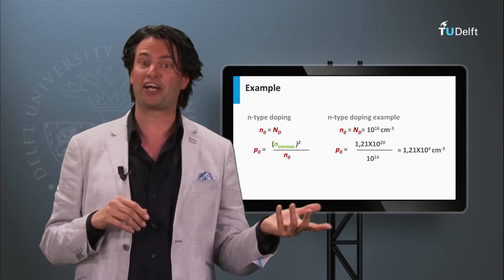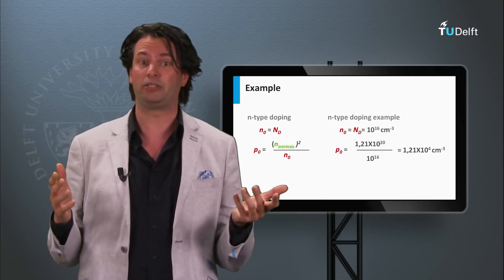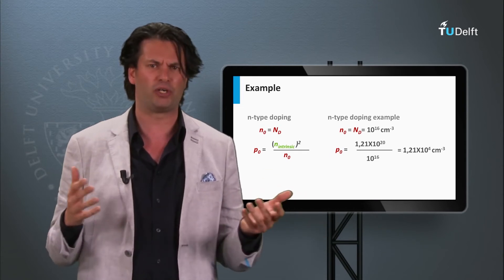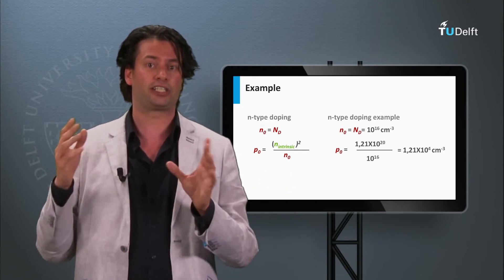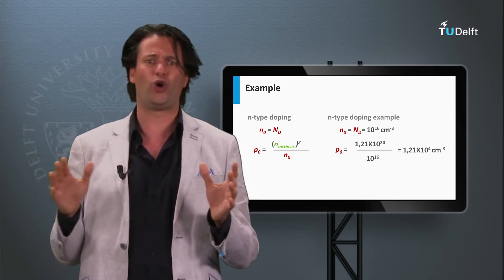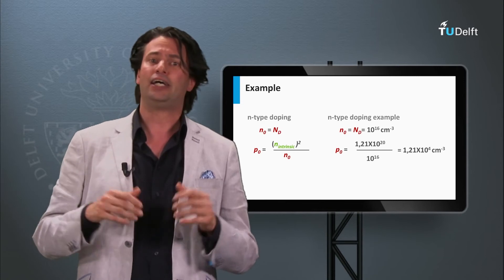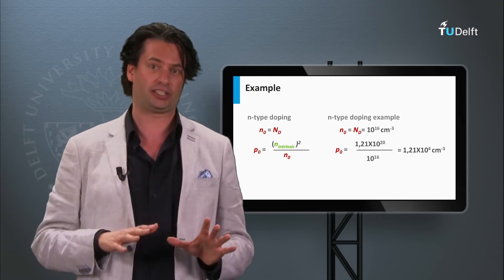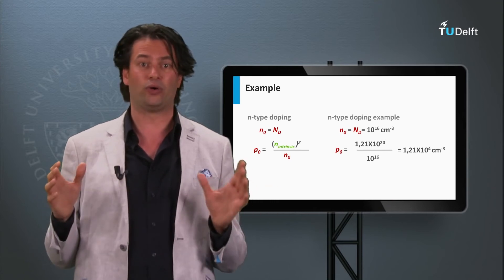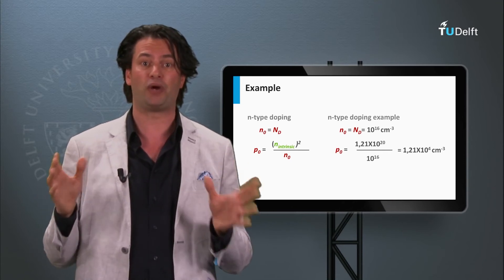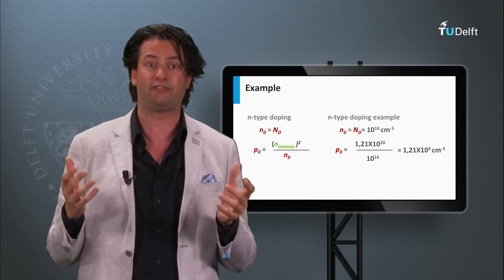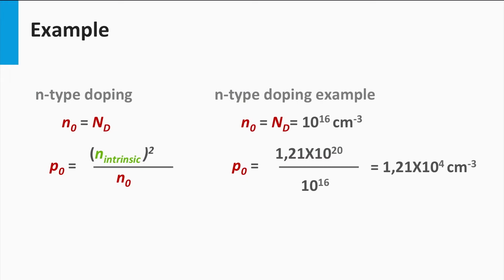Let's take an example. We incorporate 10 to the 16th per cubic centimeter phosphorus atoms in the lattice — in other words, we have a donor density N_d of 10 to the 16th per cubic centimeter. As we assume that all donors give a free electron to the lattice, the electron density n0 is equal to N_d. Now we can calculate the hole density p0: p0 equals 1.21 times 10 to the 20th divided by 10 to the 16th, giving a hole density of 1.12 times 10 to the 4th per cubic centimeter.